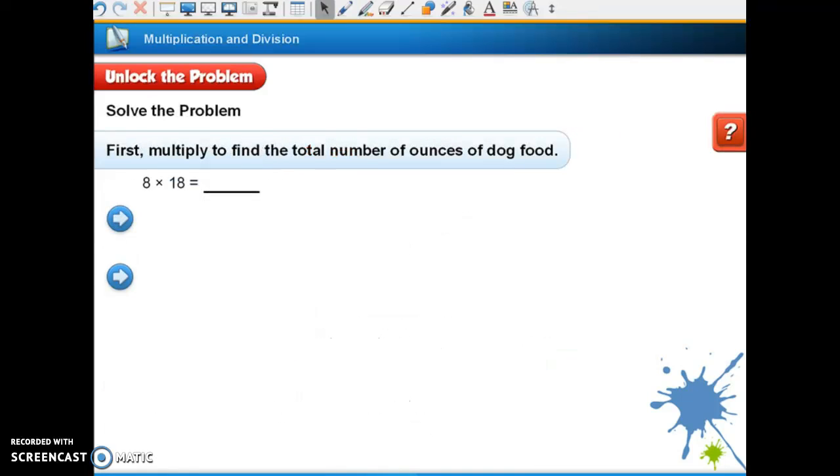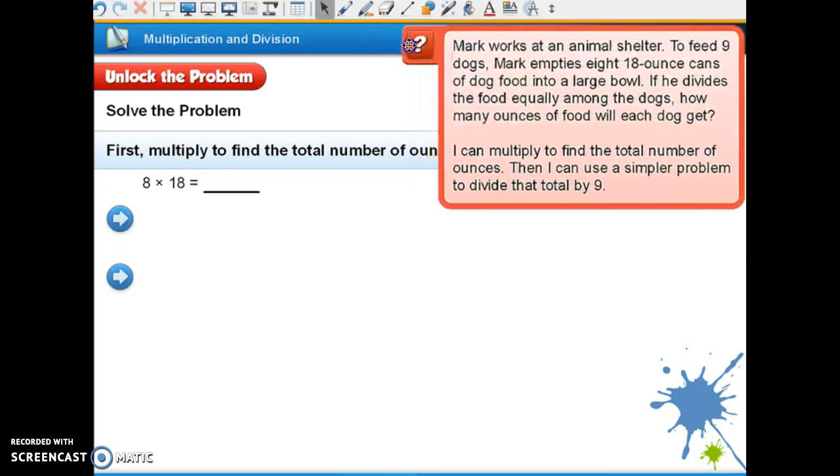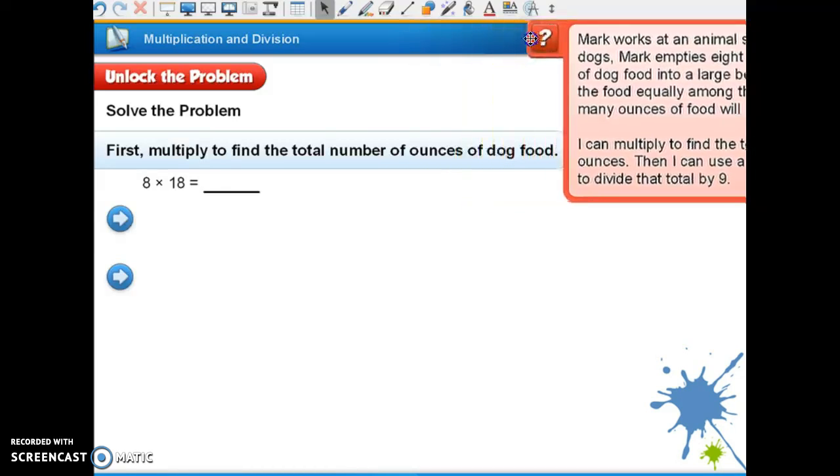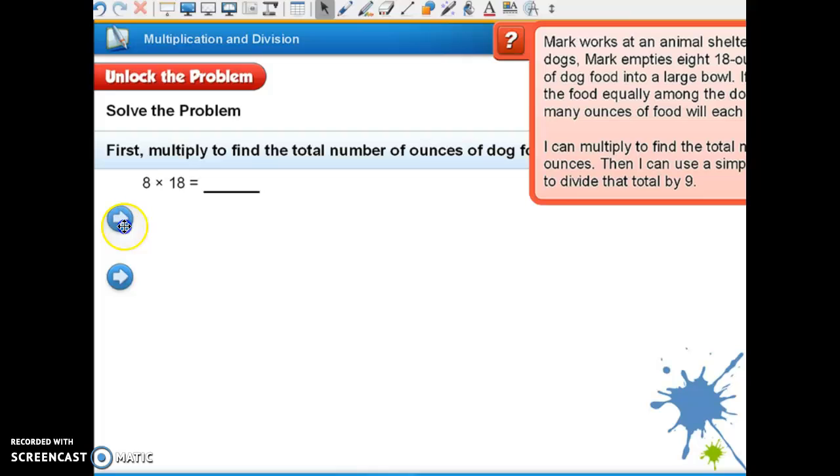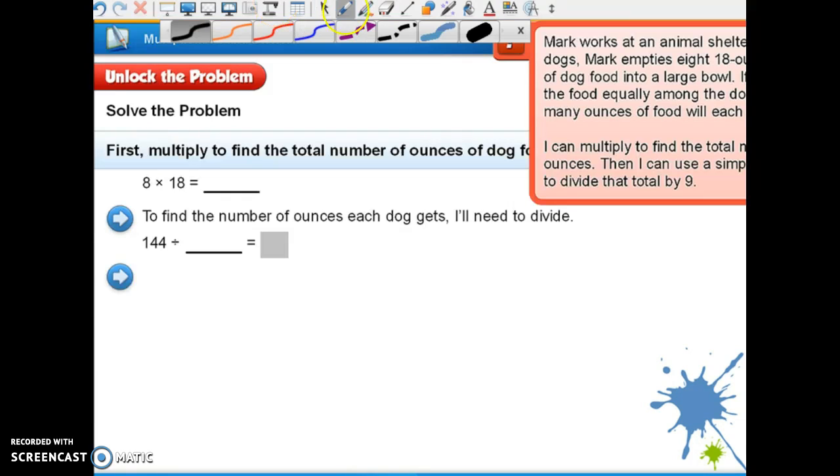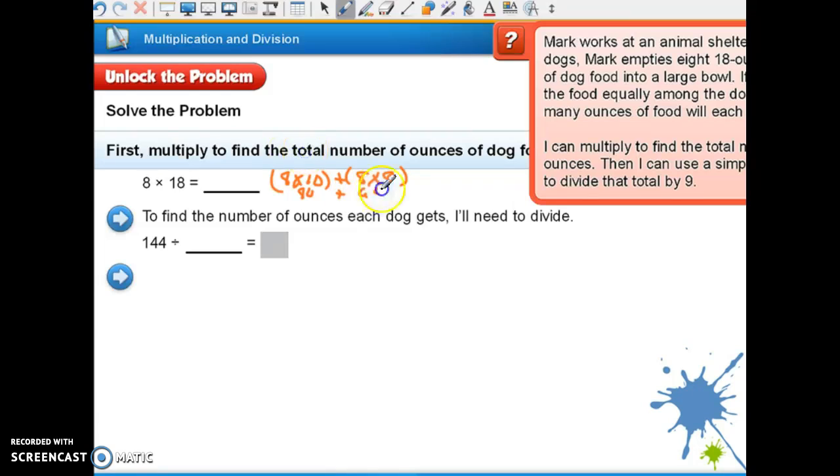So remember that our problem is that he has all that dog food. It says first multiply to find the total number of ounces in the dog food. What is eight times 18? Let's use our distributive property. Let's think a little bit. What is eight times 10 plus eight times eight? What is eight times 10? 80. And what is eight times eight? 64. So maybe that's a little easier to add.